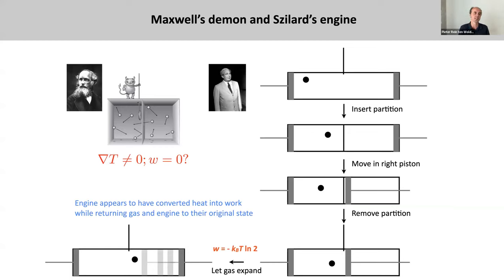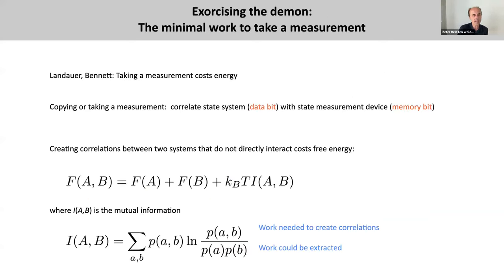Maxwell's demon is the creature that tried to create an energy gradient without having to put in any work, in apparent violation of the second law of thermodynamics. Szilard exercised this demon by realizing that you can only extract work if you do measurements, but taking a measurement costs work. Then Bennett and Landauer carved this out more clearly. At the end of the day, taking a measurement or making a copy is all about correlating the state of the system of interest — the data bit — with the state of the measurement device, the memory bit.